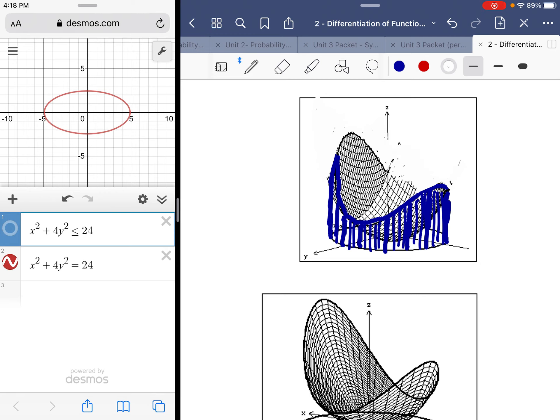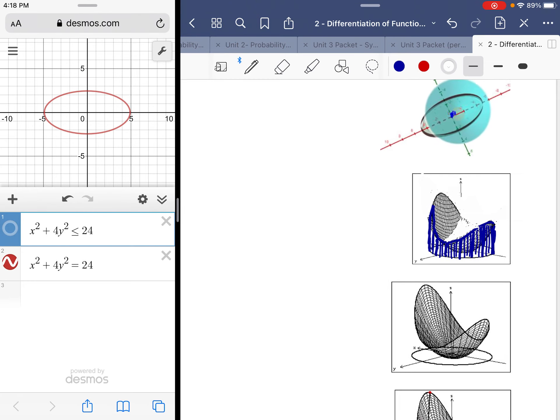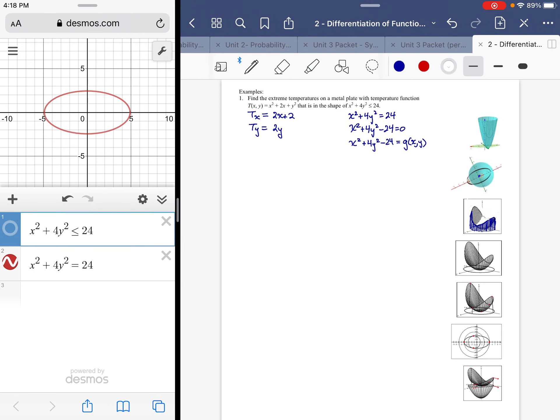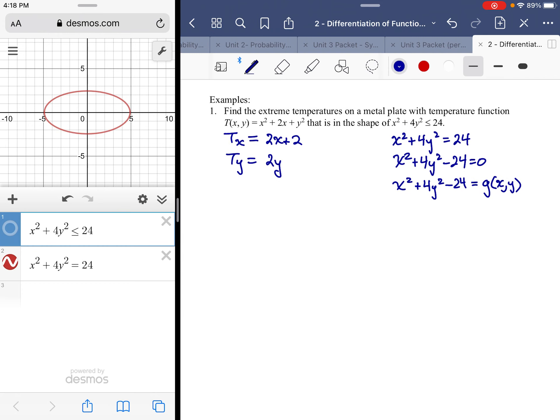Hopefully you're getting the idea. That's the effect of that boundary function. So I need partials related to that. I need G_x, which would be equal to 2x. I need G_y, which would be equal to 8y.